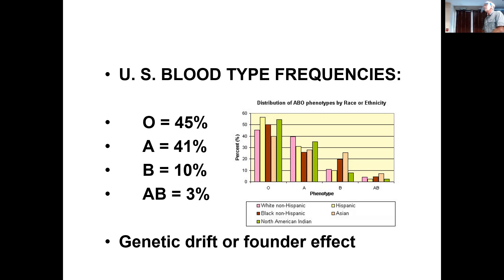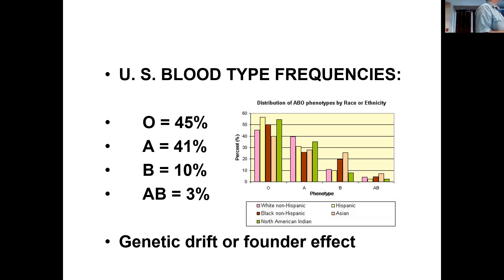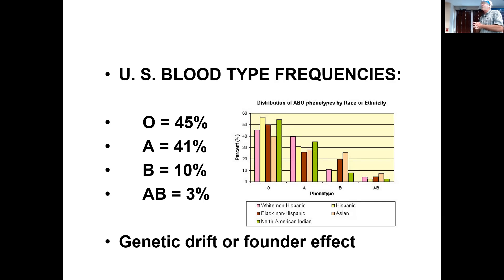The second term is genetic drift, which can also trigger differences between peoples and populations. Founder effect is actually a subcategory of genetic drift. With genetic drift — without the idea of founder effect — you're also dealing with few individuals. Small groups.